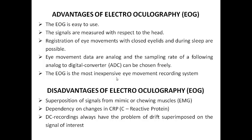Regarding the advantages of EOG: it is easy to use, signals are measured with respect to the forehead, and registration of eye movement with closed eyelids and during sleep is possible. Eye movement data are analog and the sampling rate of the analog-to-digital converter can be chosen freely. The EOG is the least expensive eye movement recording system. Drawbacks include superposition of signals from facial or chewing muscles, dependency on changes in C-reactive protein, and DC recordings always have the problem of drift superimposed on the signal of interest.